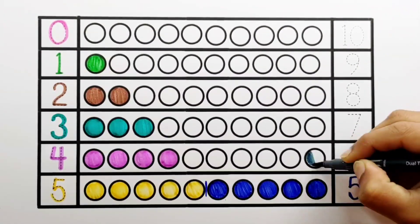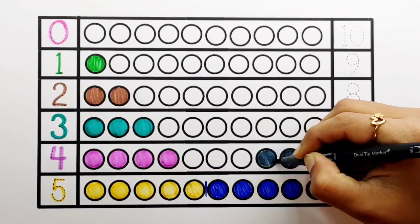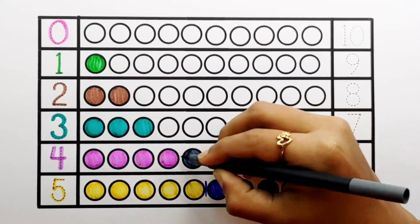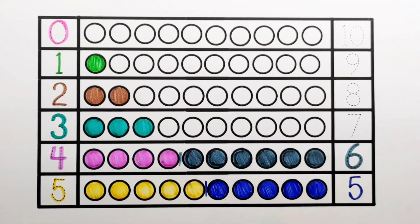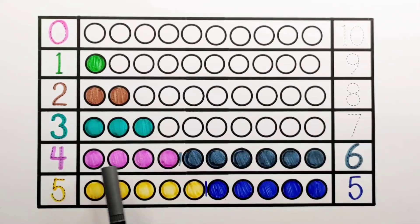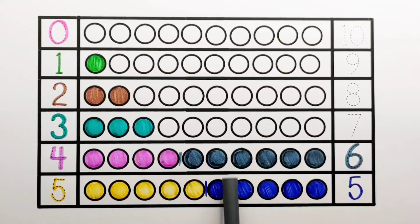Number 6 — 1, 2, 3, 4, 5, 6 — 6 balls. 4 plus 6 makes 10: 1, 2, 3, 4, 5, 6, 7, 8, 9, 10. 4 plus 6 equals 10.